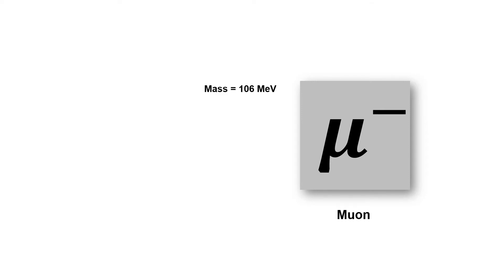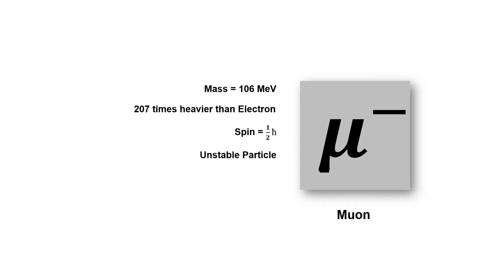The second charged lepton is the muon. Like the electron, muon is also a negatively charged particle, but it is 200 times heavier than the electron. The muon is an unstable subatomic particle — its mean lifetime is only 2.2 microseconds.